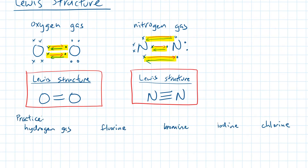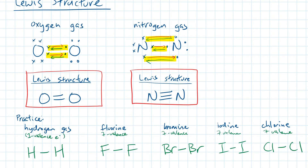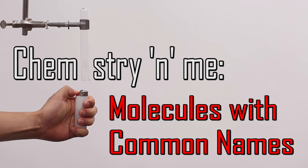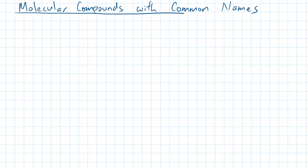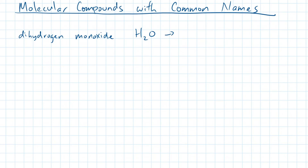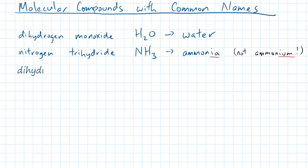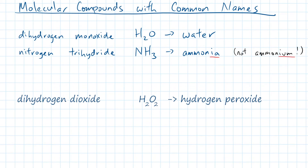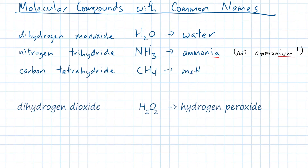Try drawing the Lewis structures for the remaining diatomic molecules. Did you get all of them correct? Awesome! Let's keep going! Some molecular compounds go by a common name. For example, H2O could technically be described as dihydrogen monoxide, but most people would rather call this molecule water. Nitrogen trihydride is commonly known as ammonia. Dihydrogen dioxide is commonly known as hydrogen peroxide. Carbon tetrahydride is commonly known as methane gas. And lastly, trioxygen is commonly known as ozone gas.